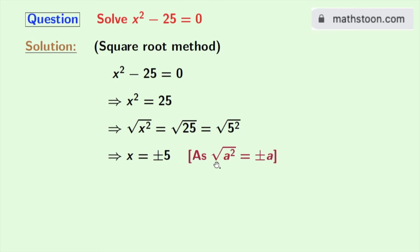As we know that square root of a square is equal to plus minus a. Here a is 5. So x equal to 5 or minus 5 are the solutions of x square minus 25 is equal to 0.